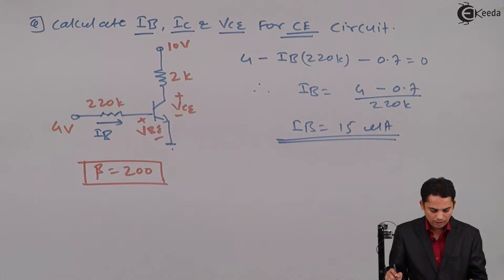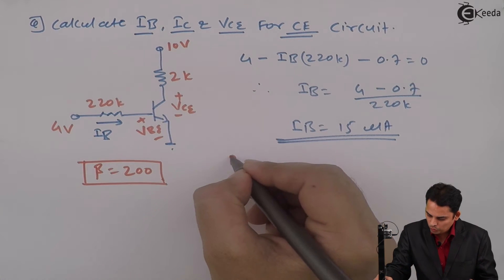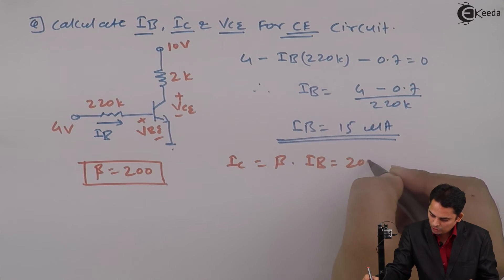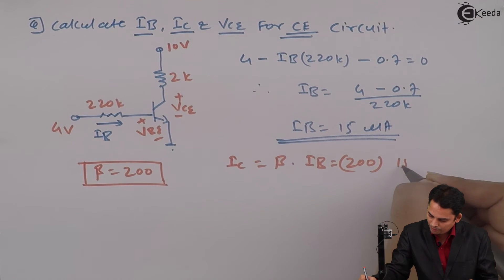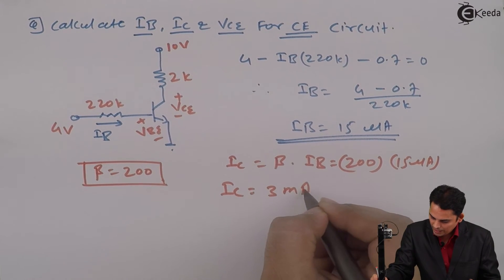Now we know that IC equals beta times IB, where beta is 200 multiplied by 15 microamperes. Hence IC equals 3 milliamperes.